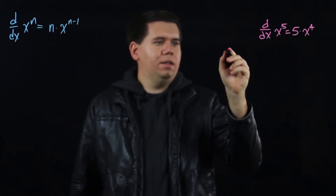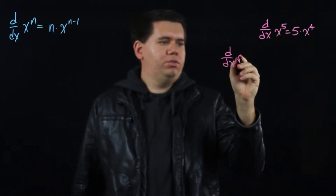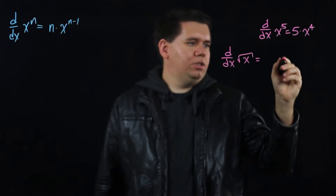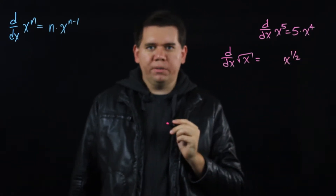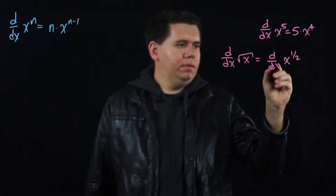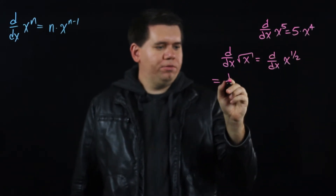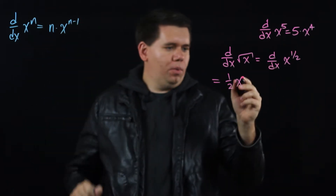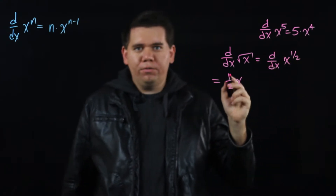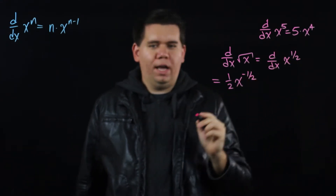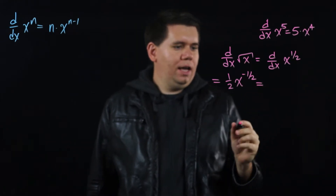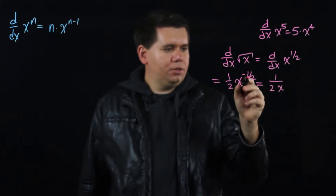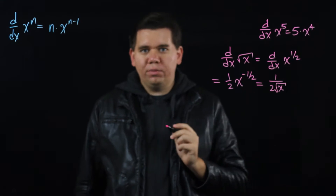The power law also lets us calculate the derivative of the square root of x, because the square root of x is secretly just x to the 1/2 power. So its derivative would be: the 1/2 drops out front, and you subtract 1 from the exponent — 1/2 minus 1 gives minus 1/2 — which is the same as 1 over 2, with x to the minus 1/2 on the bottom, or 1 over the square root of x.